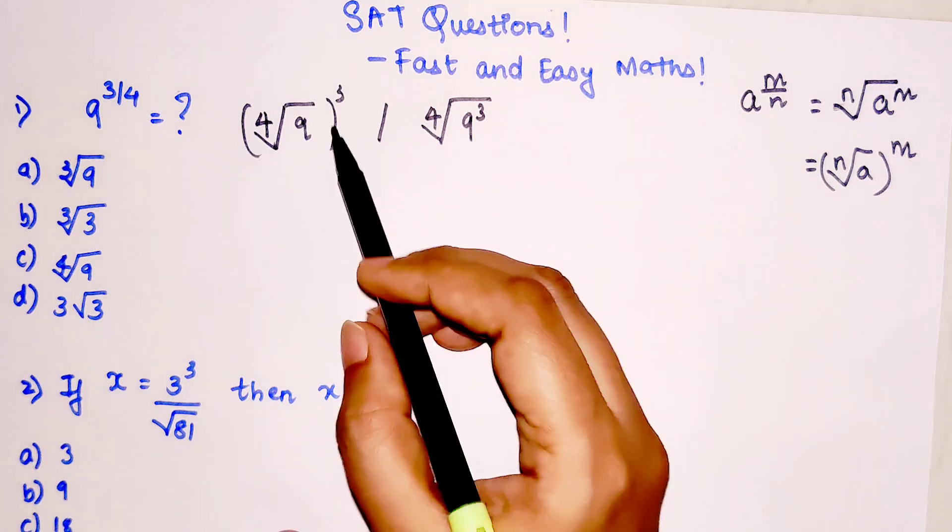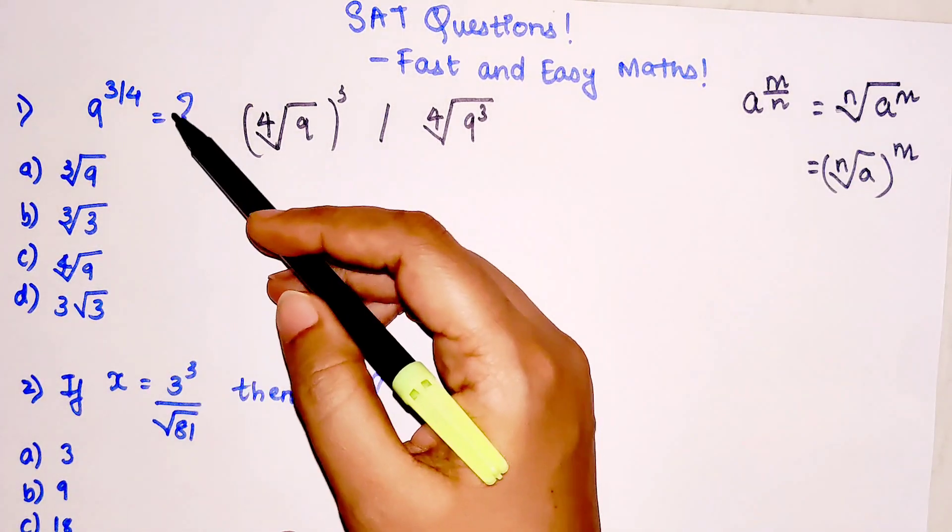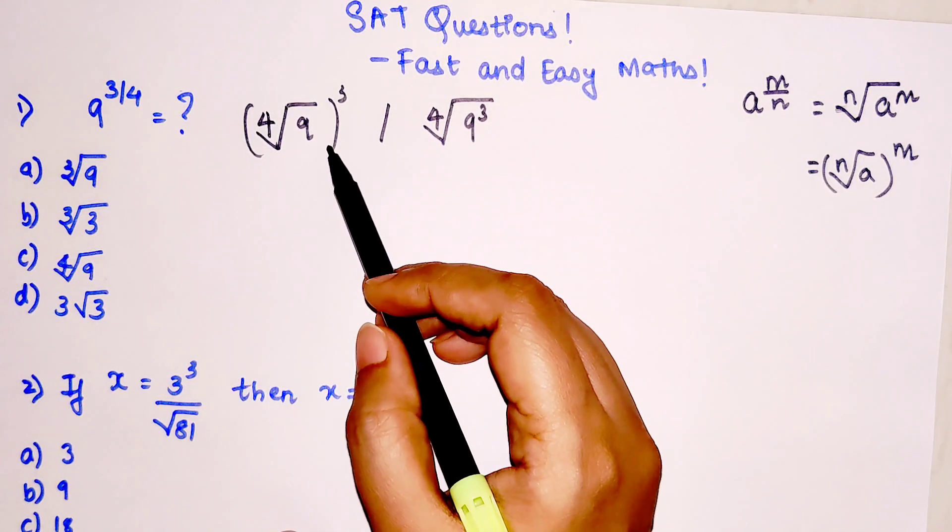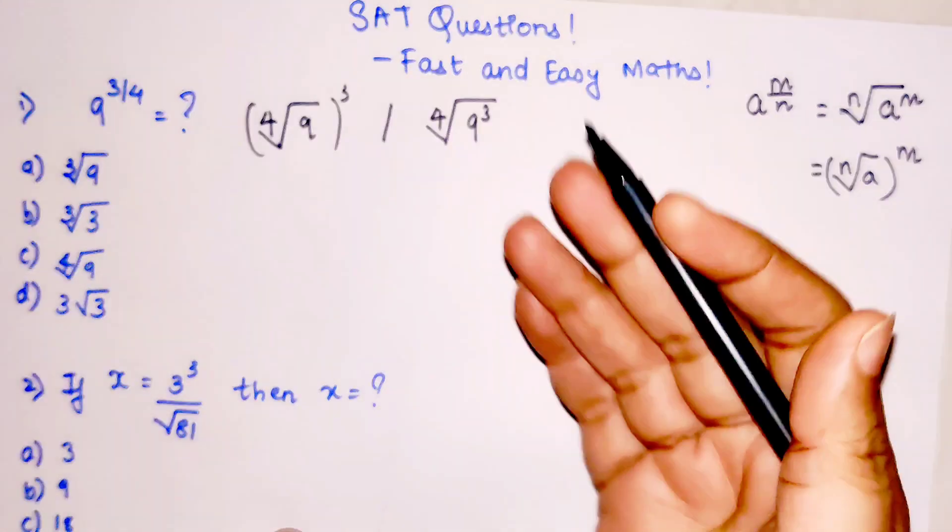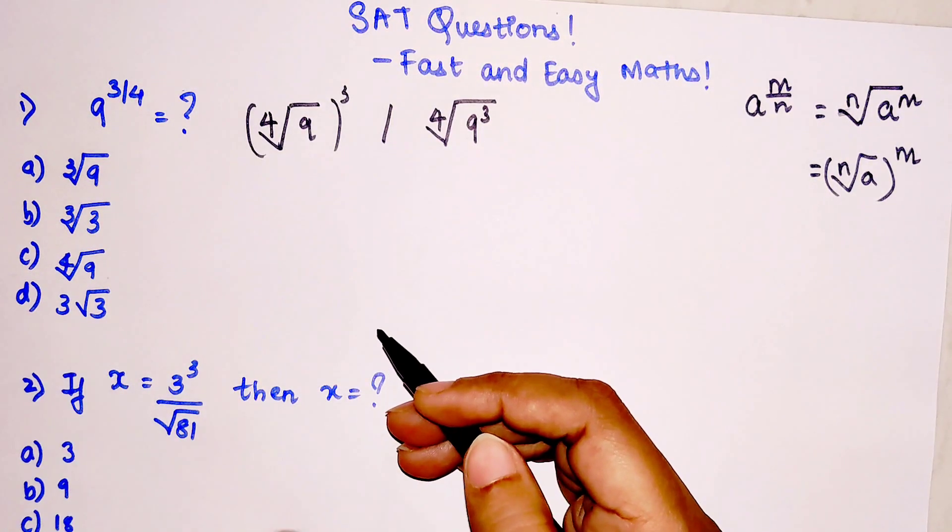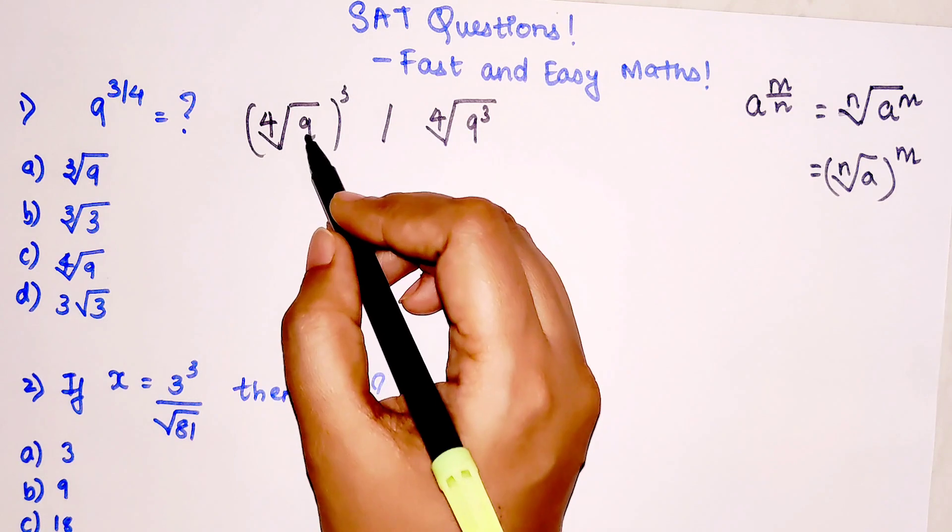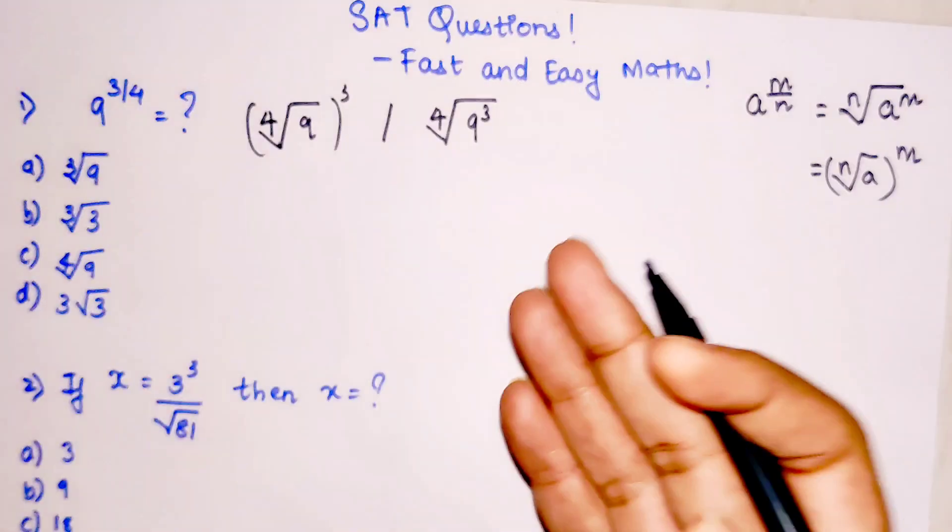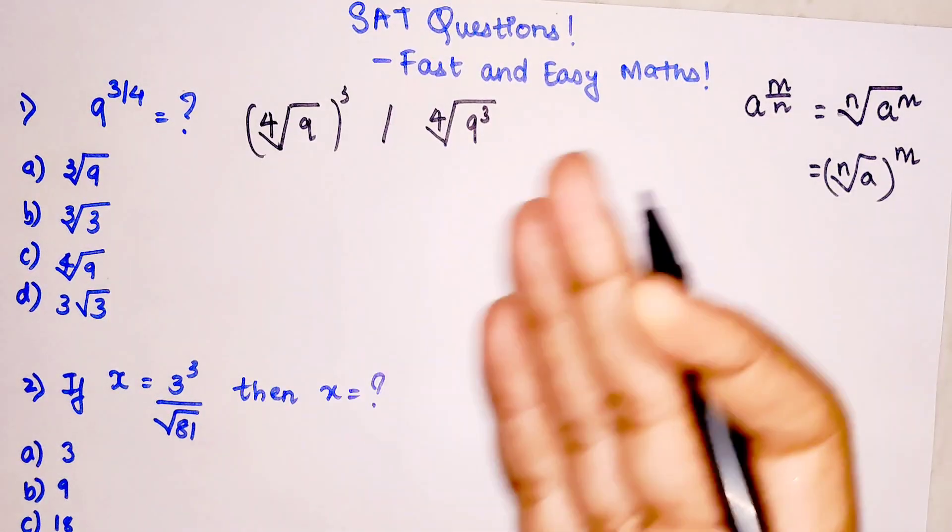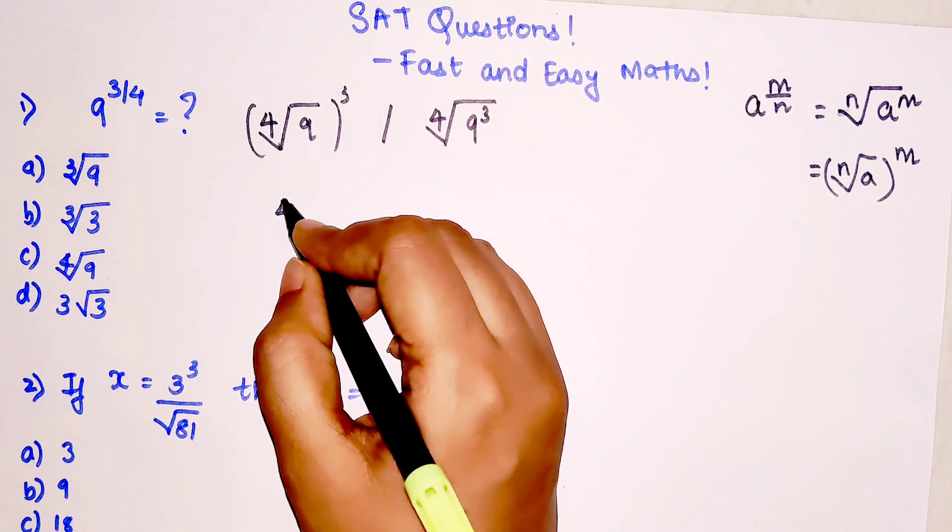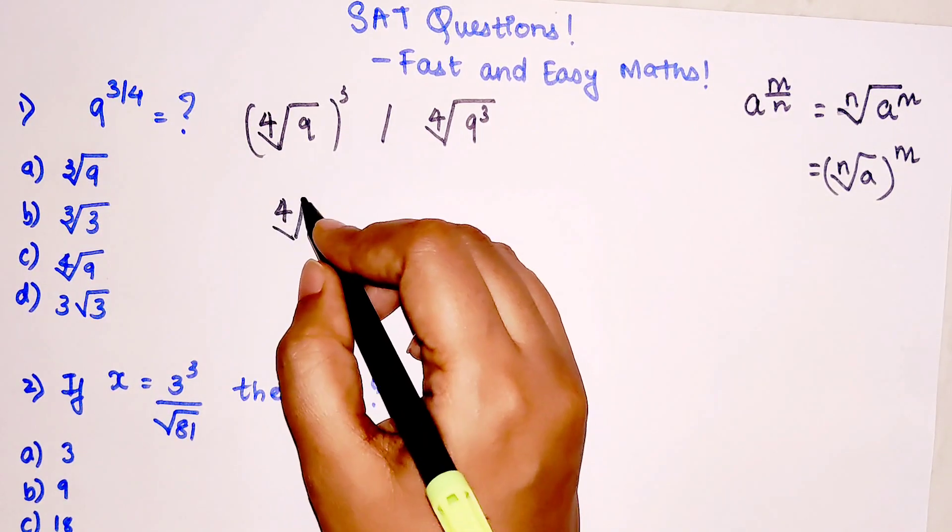Please understand, in order to solve this particular question we will use this method because from here you will be able to solve this very quickly. Now 9 itself is a square of which number? It is a square of 3. So I will write this as fourth root of 3 squared, the whole raised to 3.